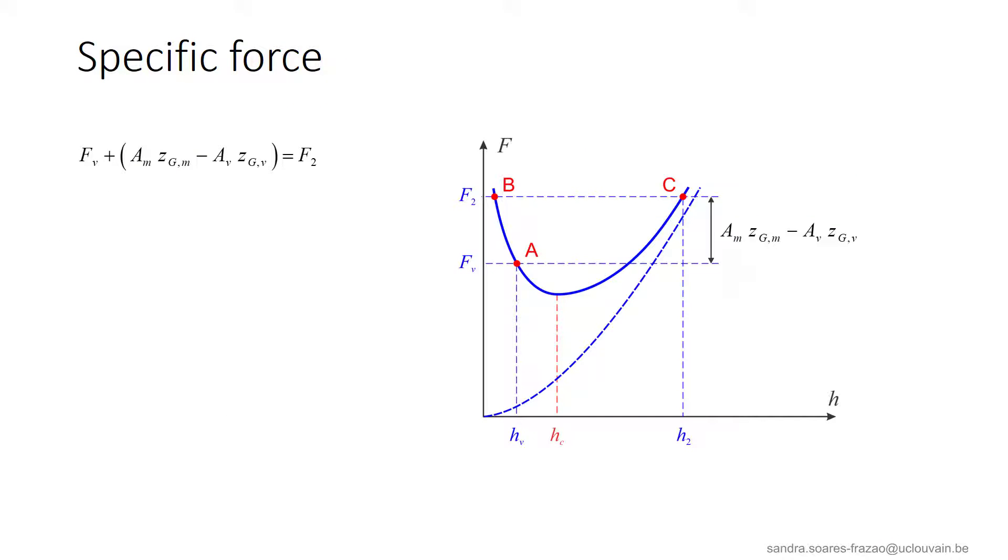We can represent the specific forces as illustrated here. Point A represents the specific force FV at the gate. For the specific force F2, we have two possible situations, point B and point C. However, point B is impossible.